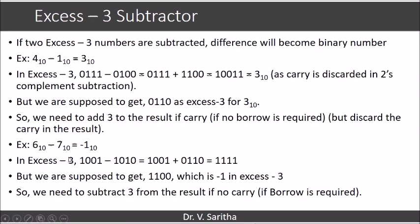Another case: consider 6 minus 7, which gives minus 1. In XS3, 6 is 9 (1001) and 7 is 10 (1010). So 9 minus 10 becomes 9 plus 0110, since the 2's complement of 1010 is 0110. We are getting 1111, but we are supposed to get 1100, which is minus 1 in XS3 — since 1 in XS3 is 4, and the 2's complement of 4 is 1100.